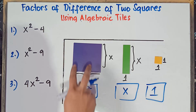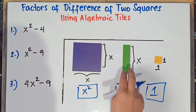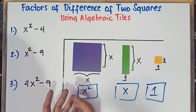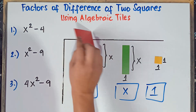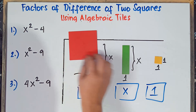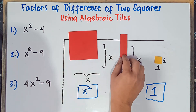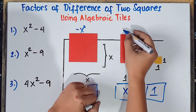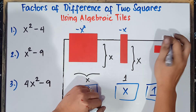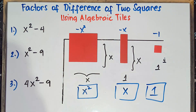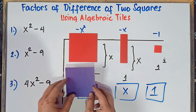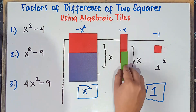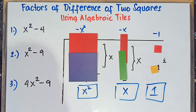So once again: this is positive x squared (the blue one), this is positive x (the green one), and this will be positive 1 (the yellow one). Now if you rotate the algebraic tile, we have negative x squared (the red one), this is negative x, and if you rotate further, this will be negative 1.